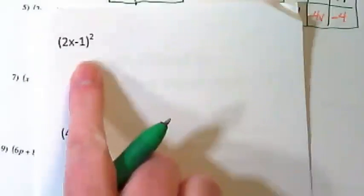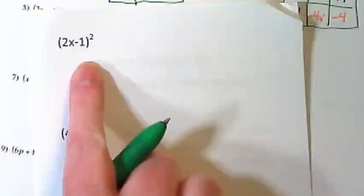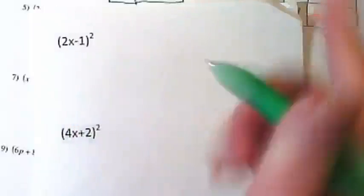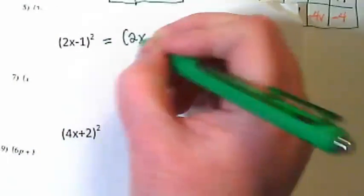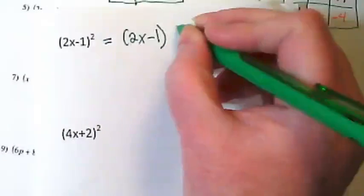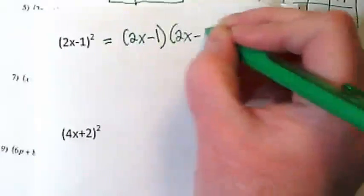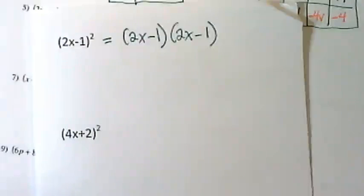Can I get you to look at the other side because this looks tricky here. When I have 2x minus 1 squared, that can be rewritten as 2x minus 1 times 2x minus 1. So just keep that in mind as you're setting up that problem.